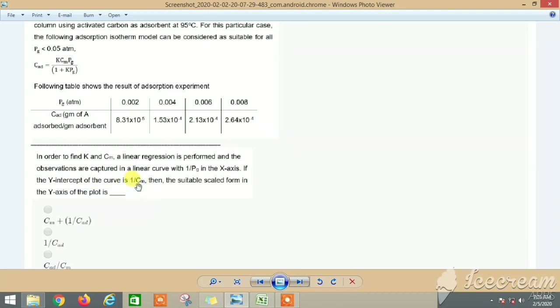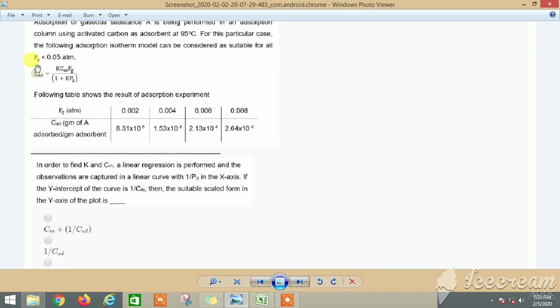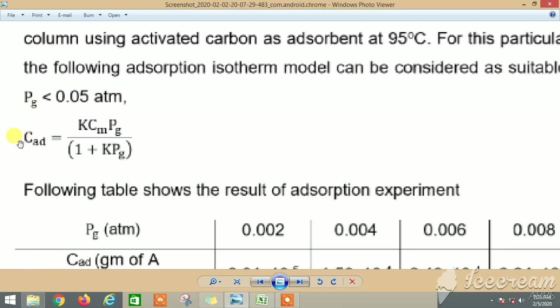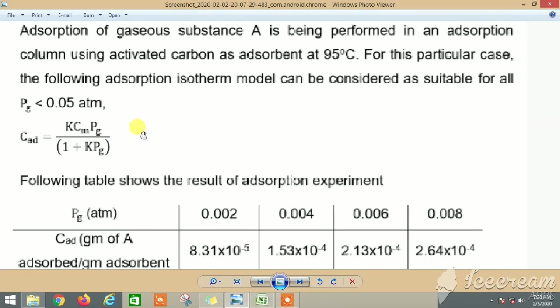So first we need to know what is the slope and what is the y-axis. If you see this equation, you can take a reciprocal of the LHS and RHS, so you will get 1/C_ad is equal to this term up here. Finally you will get that the equation 1/C_ad equals 1/(k·C_m·P_g) plus 1/C_m. It is just the reciprocal of this equation.